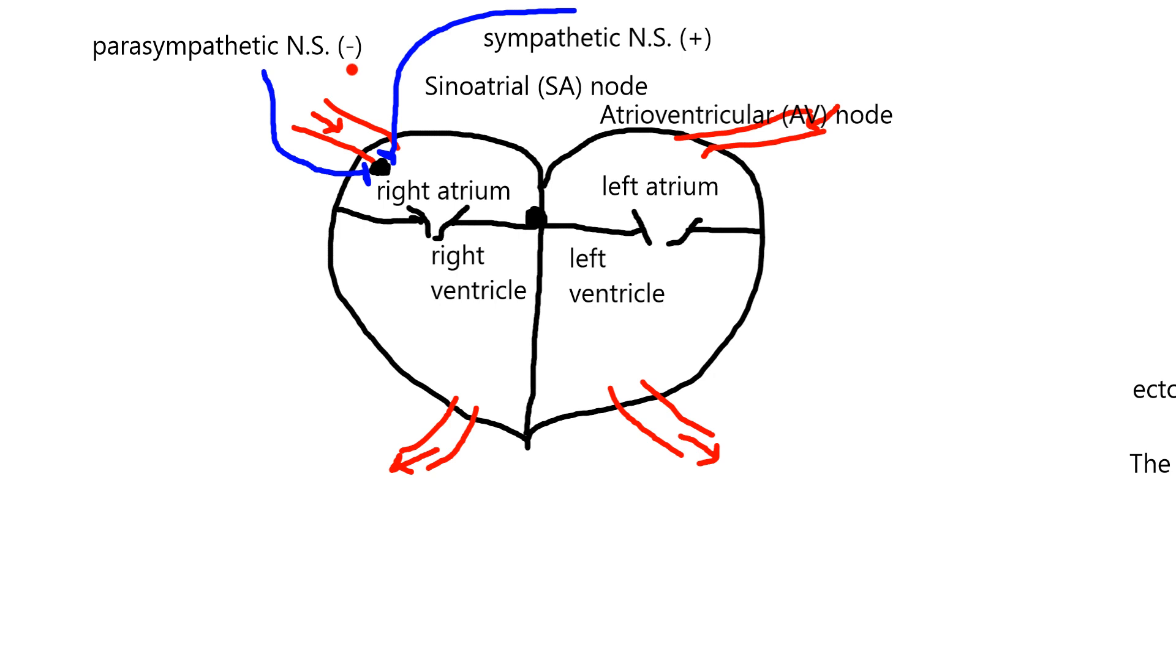And so that's bradycardia, right? There's always usually a balance between the two, but it ends up being the parasympathetic is always kind of adding a little break onto the heart. Whereas the sympathetic nervous system tends to come on and off.